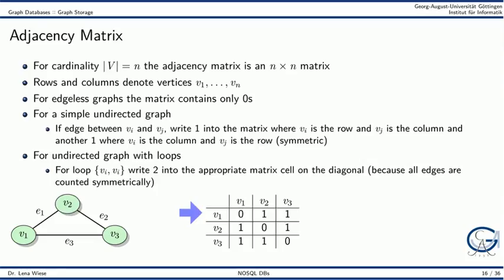The first option with better runtime behavior is the adjacency matrix. For N nodes, the adjacency matrix is an N times N matrix where rows and columns denote the vertices. If there are no edges, the matrix contains only zeros. If there is an undirected edge between two nodes, we flip the bits for the rows and columns of the nodes. For edge E1 between V1 and V2, we set the bit where V1 is the row and V2 is the column. The matrix is symmetric, and each edge is represented twice.